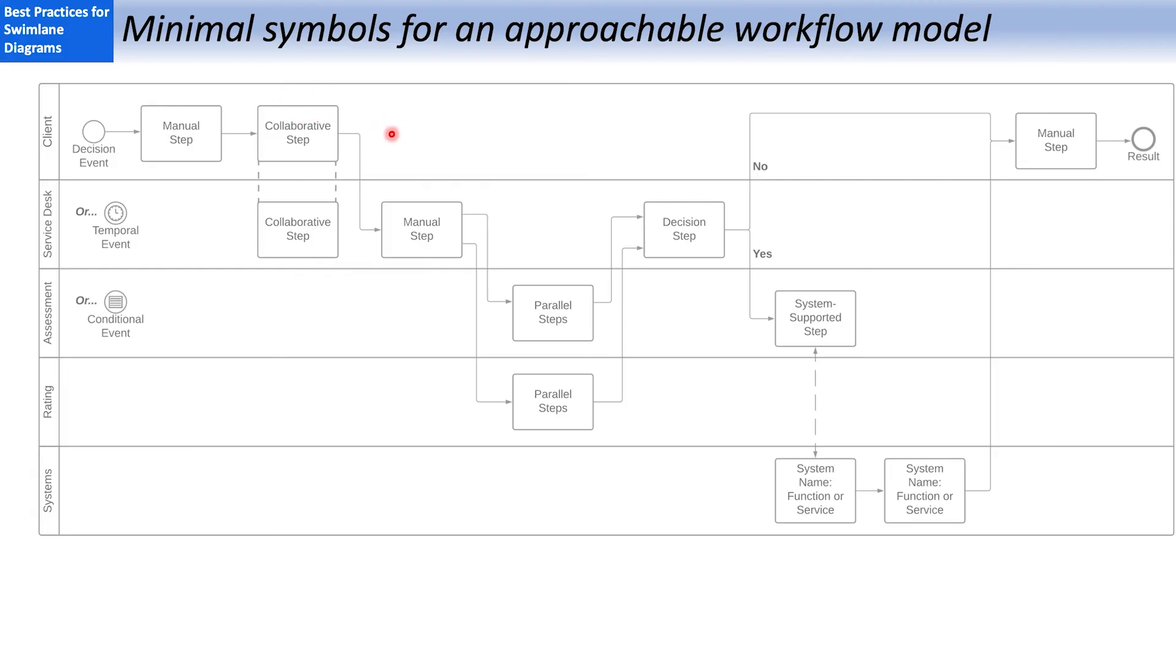So I'm going to advise extreme restraint, only using a few of the available symbols. As I've shown in this sample here, I've got the lane, I've got the steps, I've got the flow, and I don't use the BPMN gateways. I do use the event symbols. Clients find those helpful. The gateways end up being visual clutter for a lot of business people. For instance, if I have a decision,